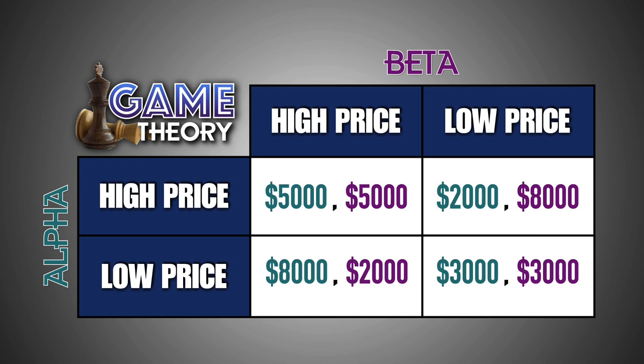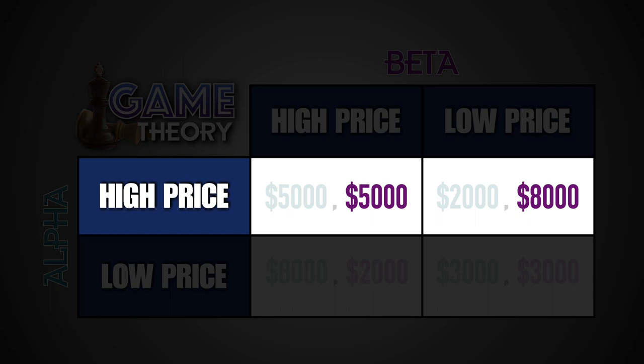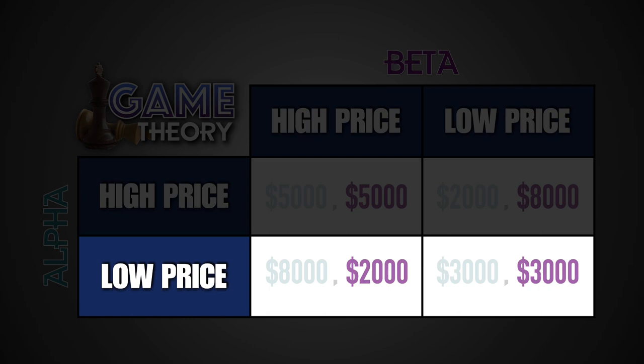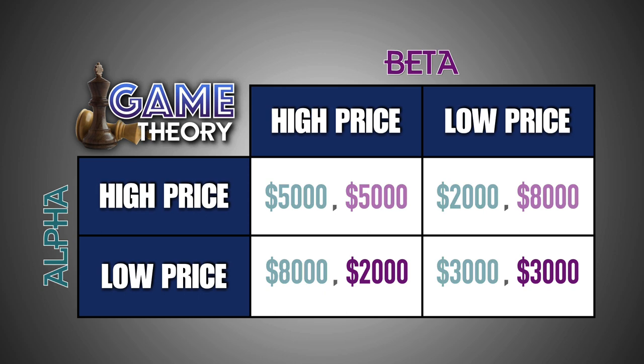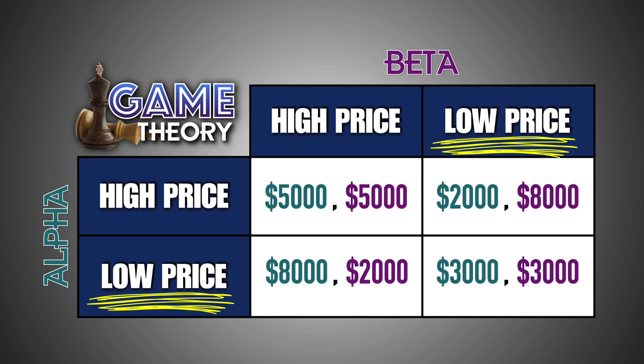It appears that Beta also has a dominant strategy. With identical payoffs, Beta's dominant strategy is also to set a low price level. Like Alpha, when choosing a low price strategy, Beta will earn $3,000 more in daily profit if Alpha sets its price high, and $1,000 more in daily profit if Alpha also sets its price low. So what is the likely outcome of this game theory scenario? Both Alpha and Beta will follow their dominant strategies and set their prices low, leading both firms to earn $3,000 in economic profit.